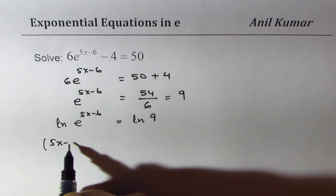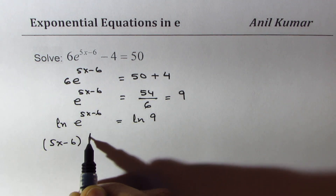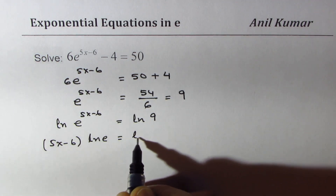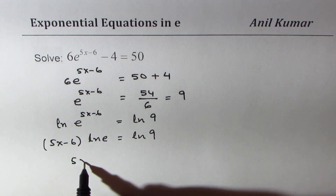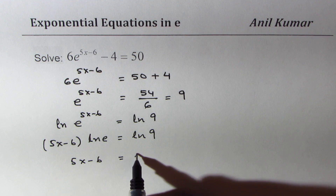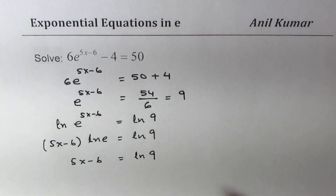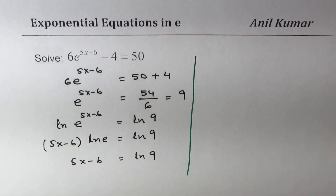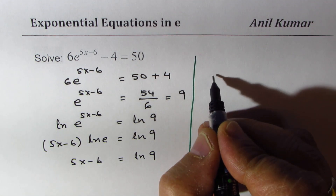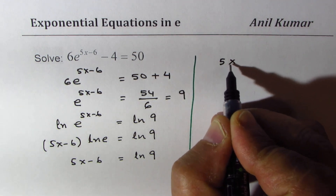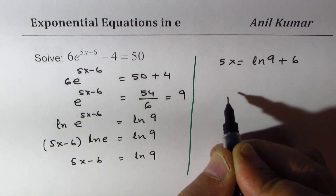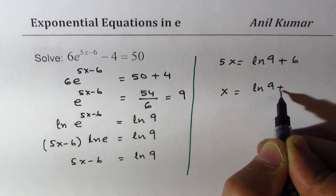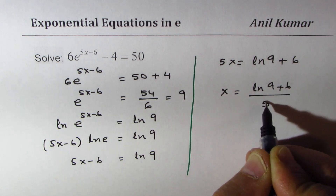Applying the properties of logarithms, we get (5x minus 6) times ln(e) equals ln(9). Since ln(e) is 1, we have 5x minus 6 equals ln(9). Isolating x: 5x equals ln(9) plus 6, so x equals (ln(9) plus 6) divided by 5.